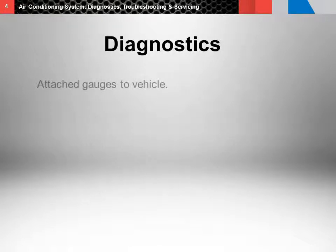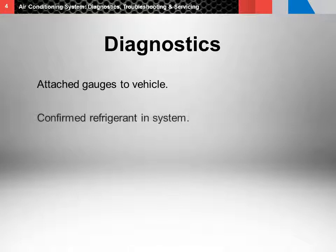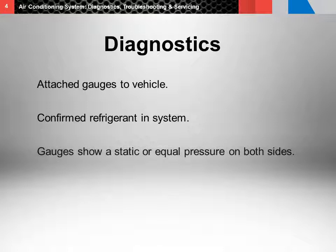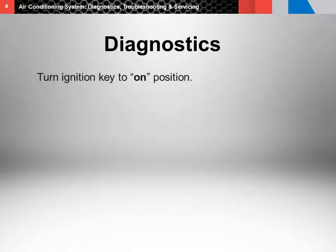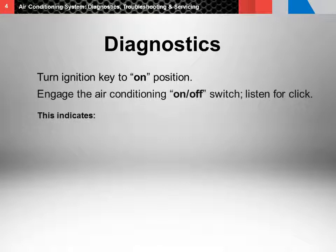So far, we've attached gauges to the vehicle and confirmed that refrigerant is present in the system. The gauges should show a static or equal pressure on both the low side and high side. With the initial inspection completed, it's time to start diagnostics. Begin by turning the ignition key to the on position — do not crank the engine. Engage the air conditioning on-off switch. What we're looking for is the sound of the air conditioning compressor clutch engagement.